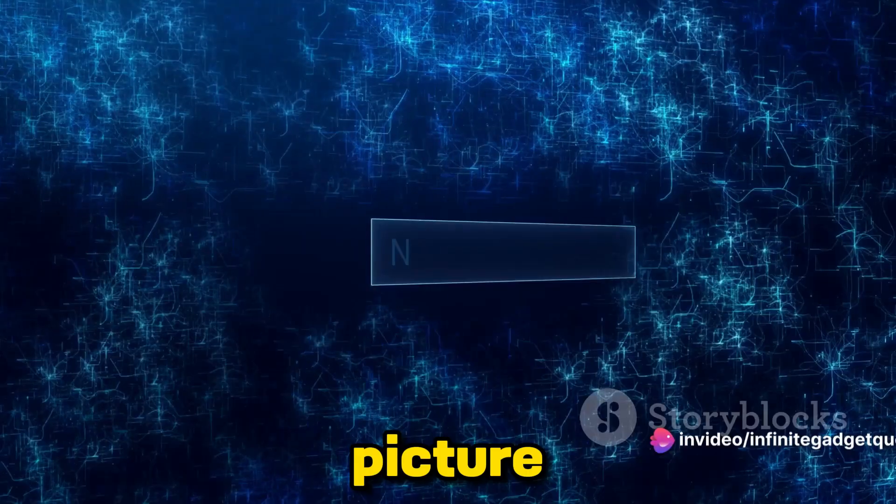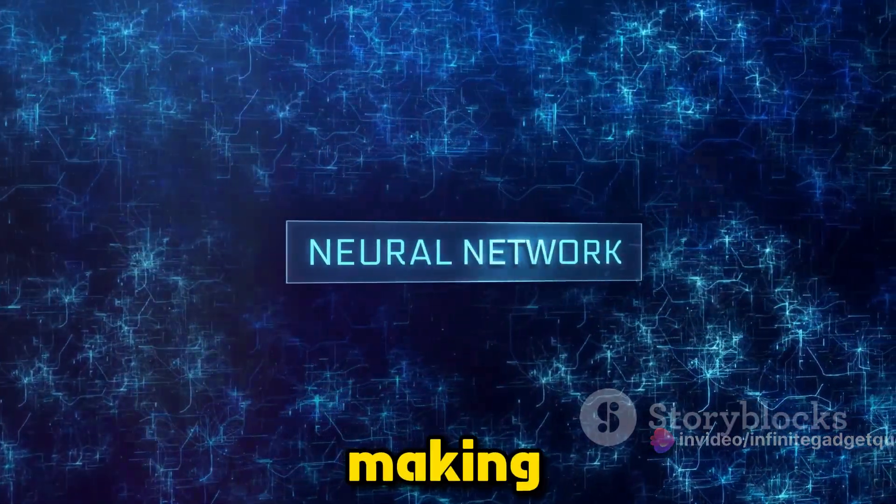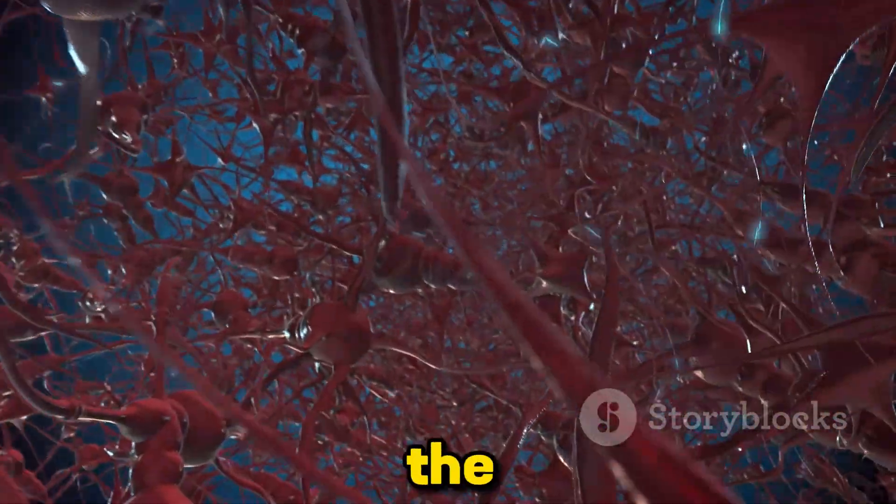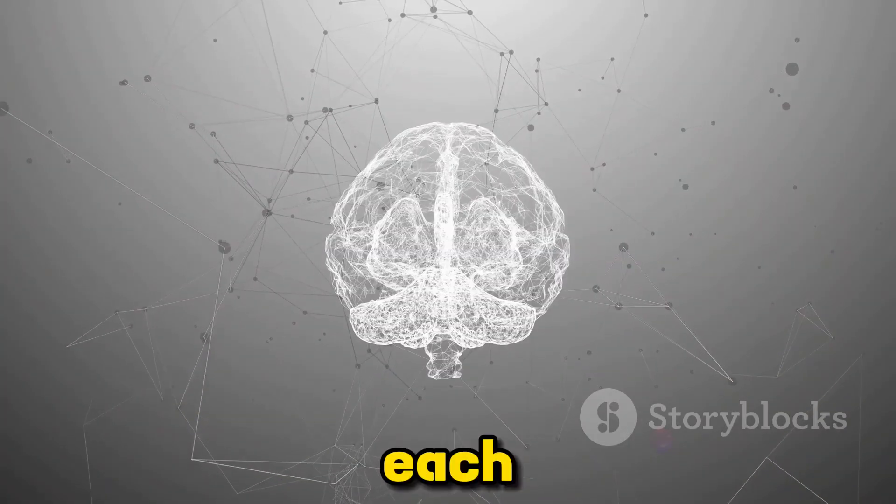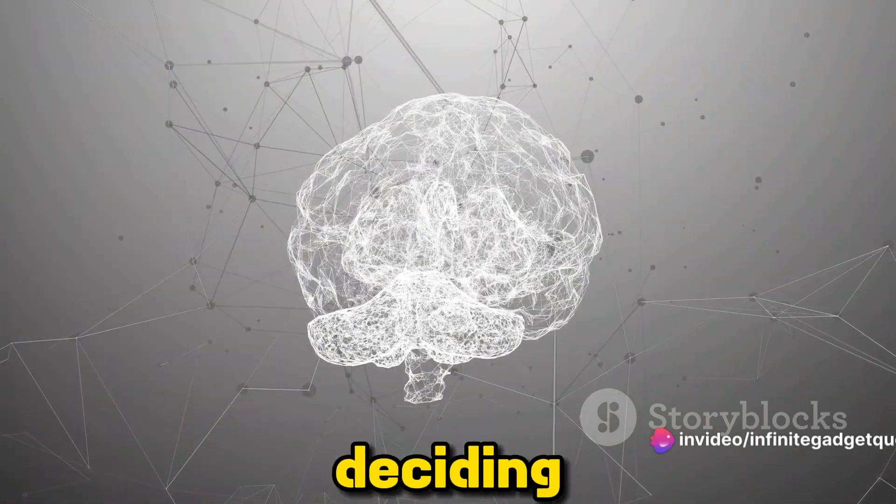Let's break it down. Picture a vast web, a network of interconnected nodes or decision-making points. These nodes known as artificial neurons are inspired by the neurons in our own brains. Each one is a decision-making point evaluating the information it receives and deciding how to react.